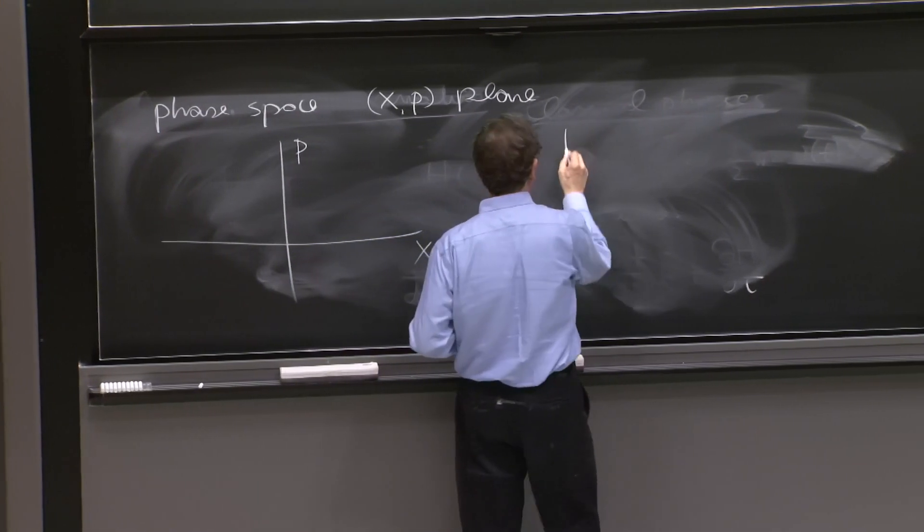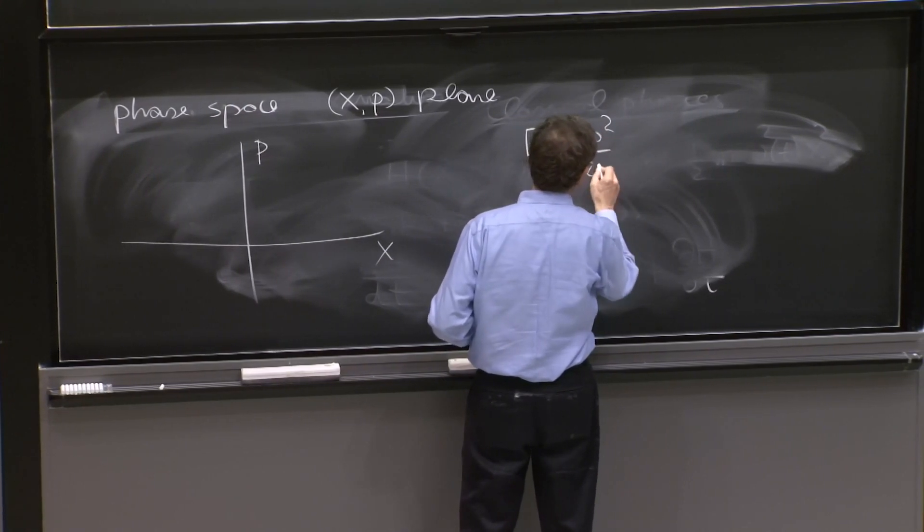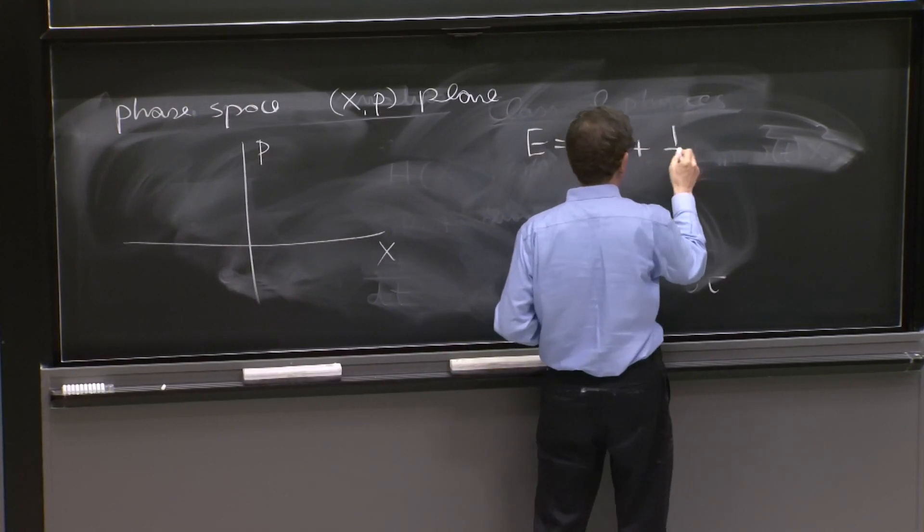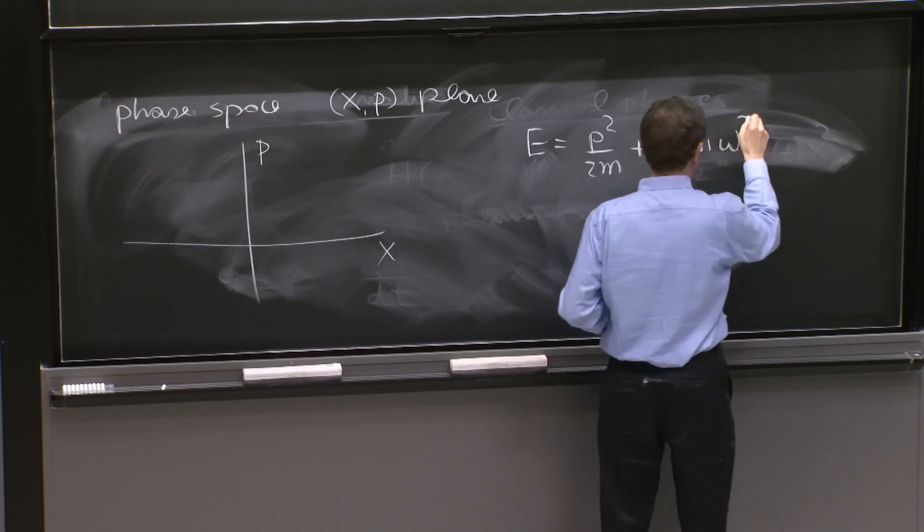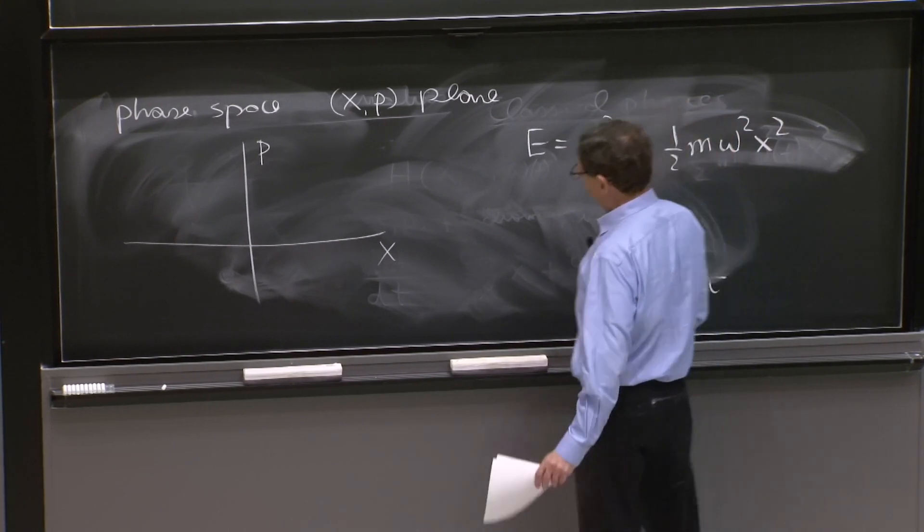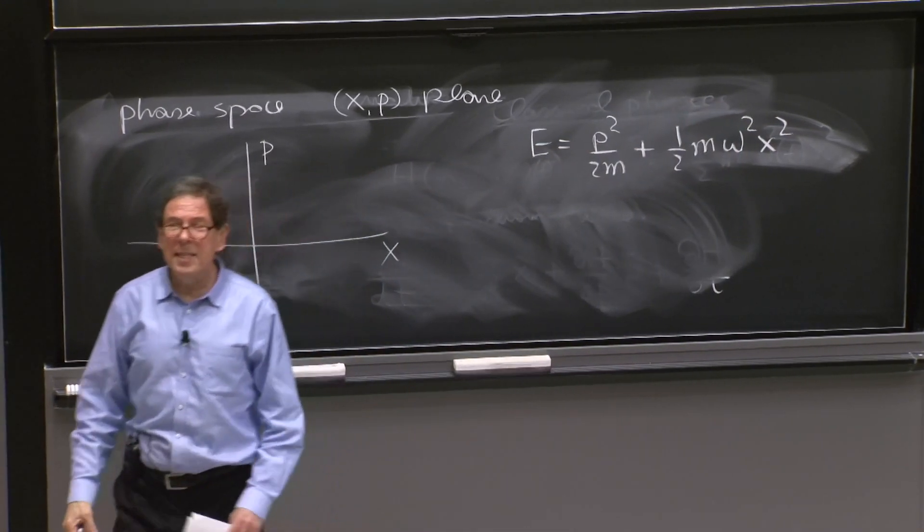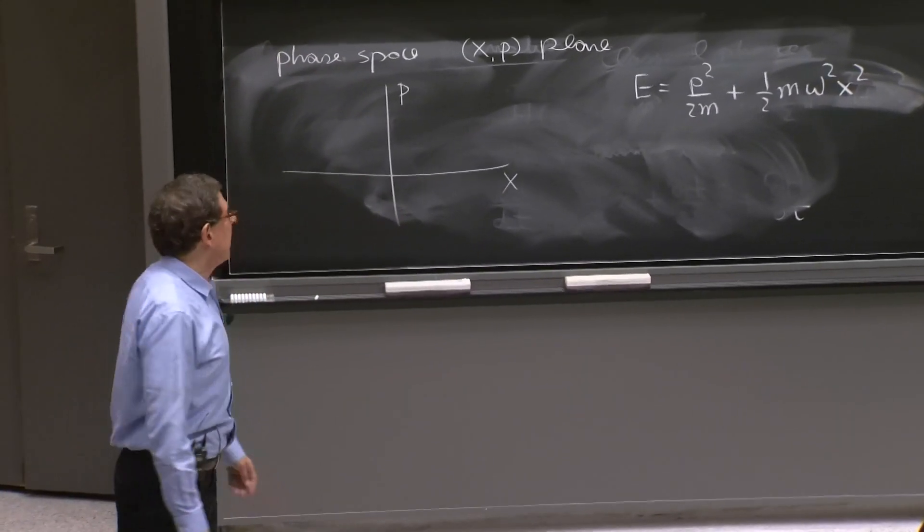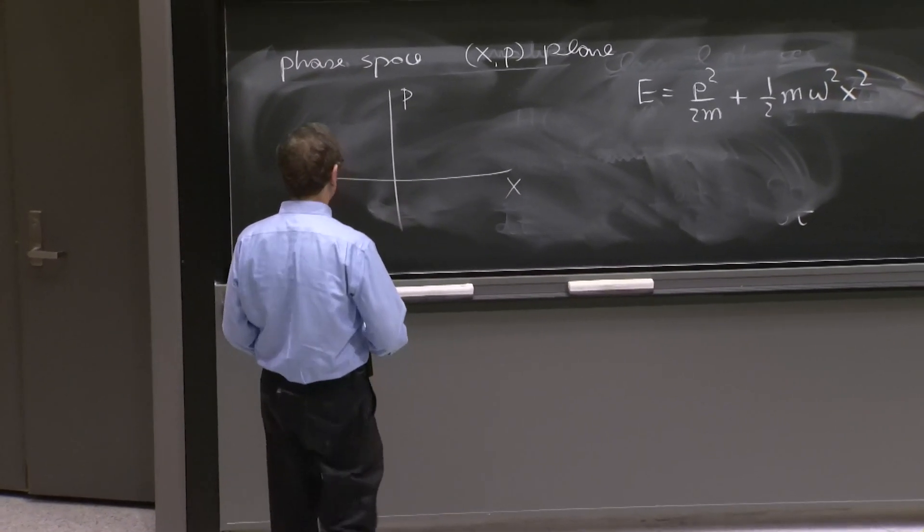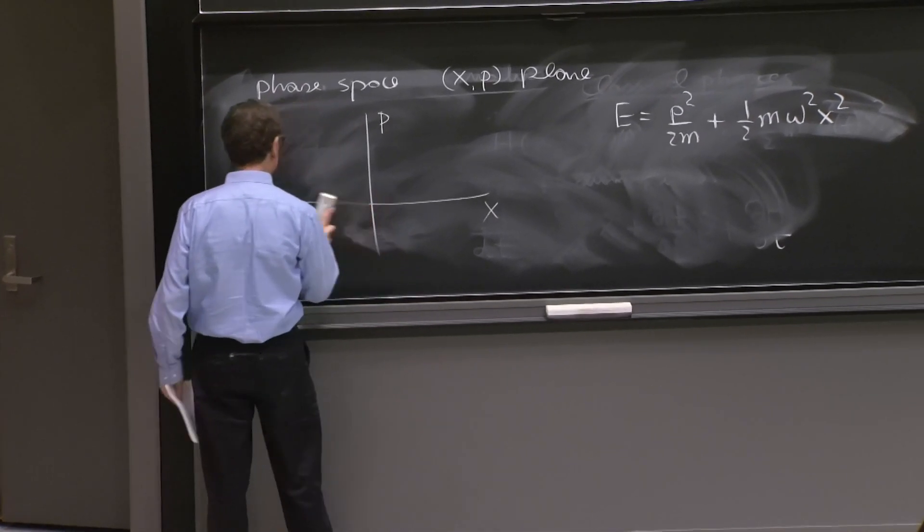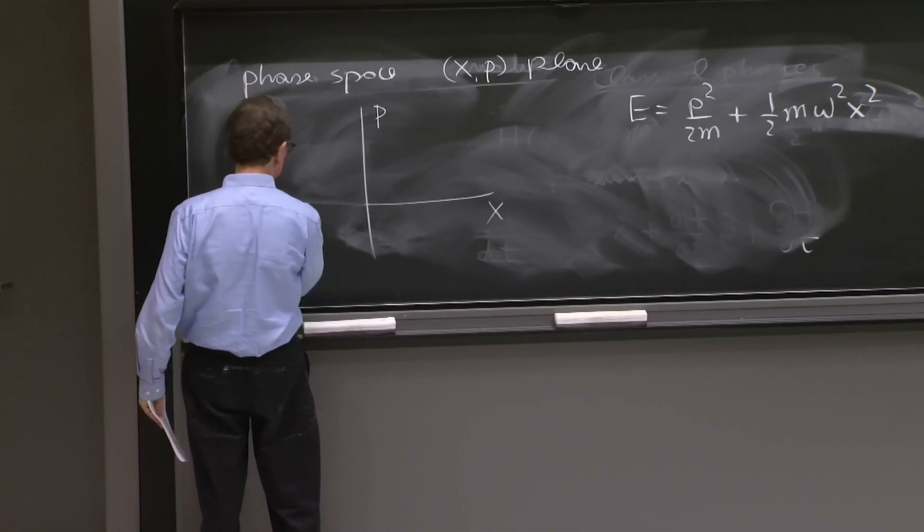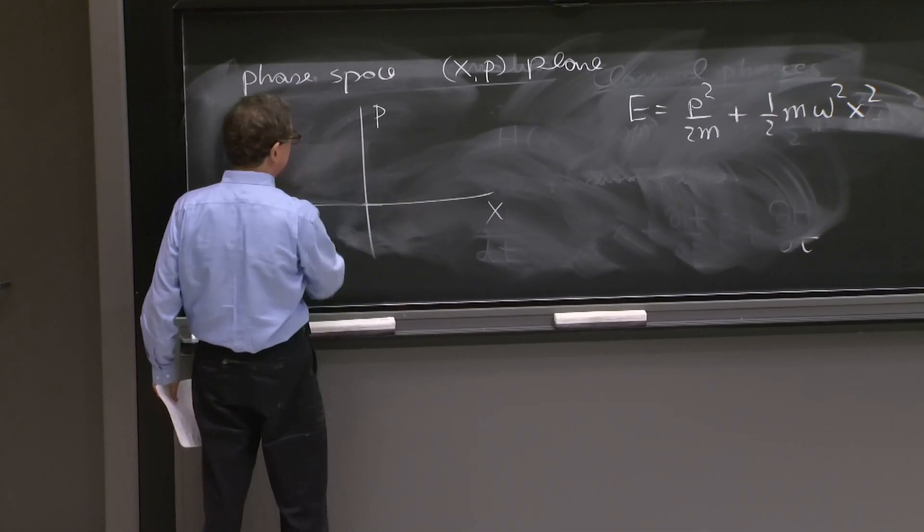Here we have that the energy is equal to p squared over 2m plus 1/2 m omega squared x squared. So this is an ellipse in the x, a closed orbit. A constant omega solution is an ellipse in this plane.